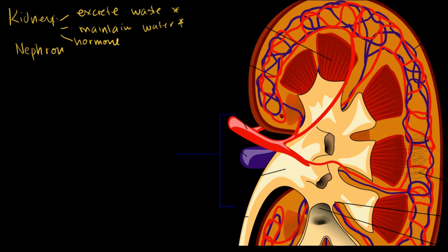Most of us have two kidneys — they're closer to our back on either side of our spine, behind our liver. This is a zoomed-in version of it. A kidney isn't as big as — if you're watching this in full screen — it's not going to be as big as this picture is, but we've sliced it so we can see what's going on inside the kidney.